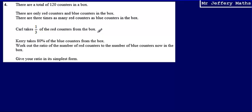Carl takes one third of the red counters from the box. Kerry takes 80% of the blue counters from the box. We're asked to work out the ratio of the number of red counters to the number of blue counters now in the box, and give it in the simplest form.